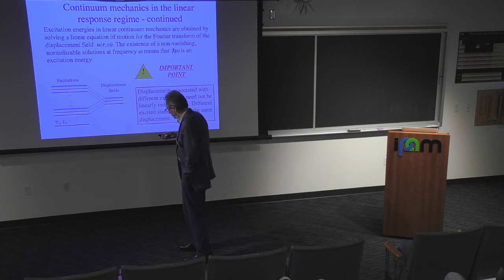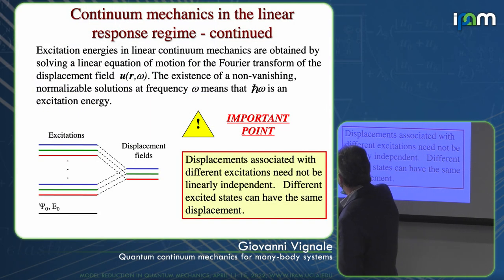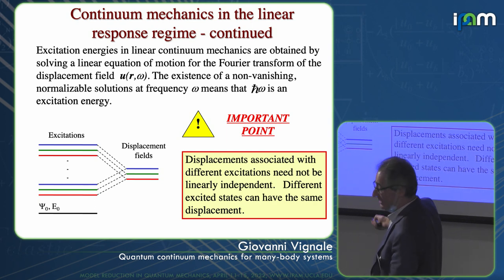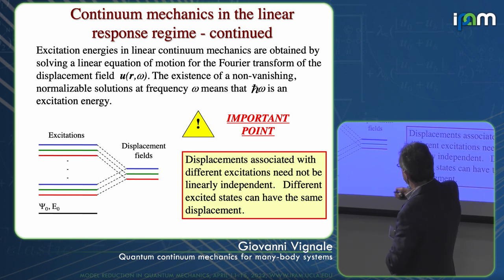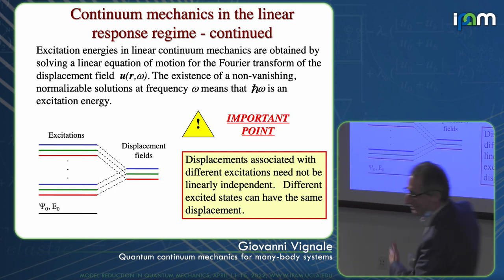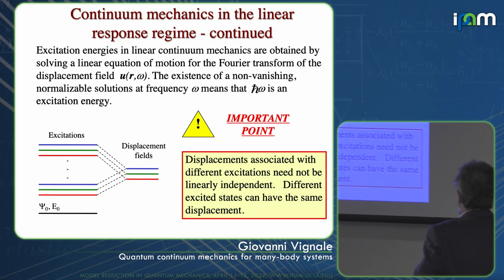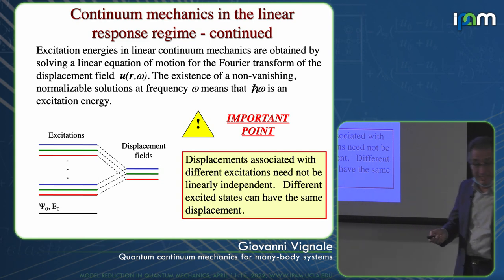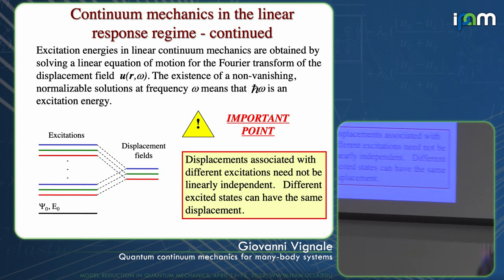This is a cartoon showing that there can be two excitations — these two blue ones — that produce the same displacement field. The reason is that the equations of motion for each are at different frequencies, and the kernel of that equation of motion depends on frequency. The relation between the space of displacement fields and the space of excitations is an interesting question mathematically.